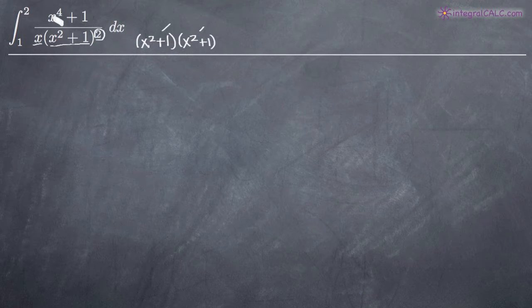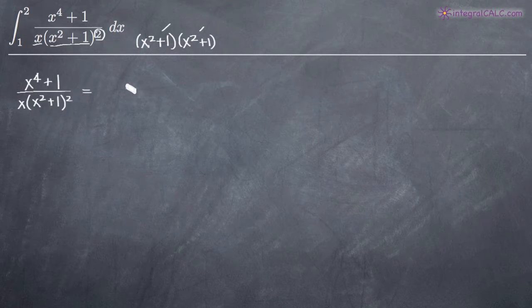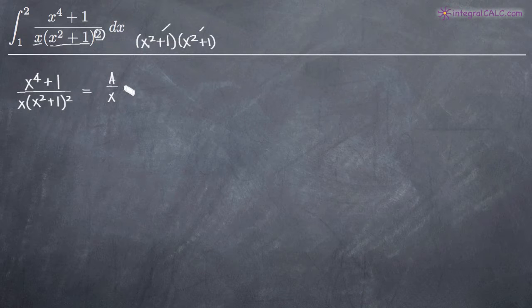Whenever we're doing a partial fractions problem, we want to take our fraction exactly as it exists inside of our integral and put it on the left-hand side of the equation. So x to the fourth plus 1 over x times x squared plus 1 squared goes on the left-hand side. Now on the right-hand side, we start developing the decomposition. First, we deal with the linear factor x — since it's a linear factor, we just put a over x.